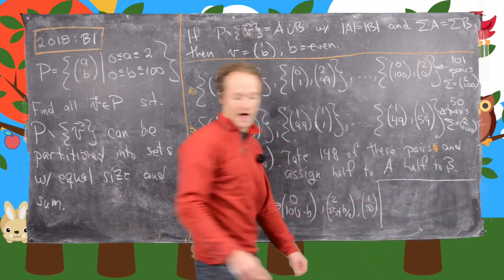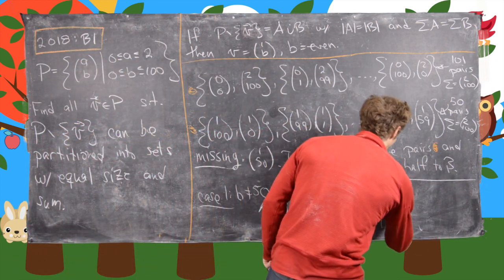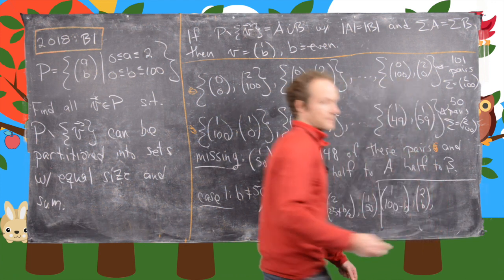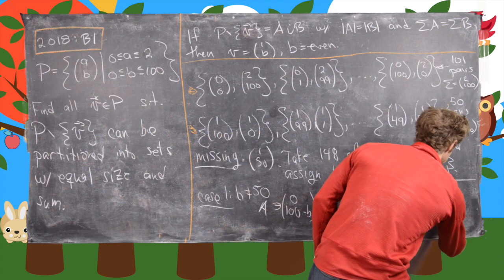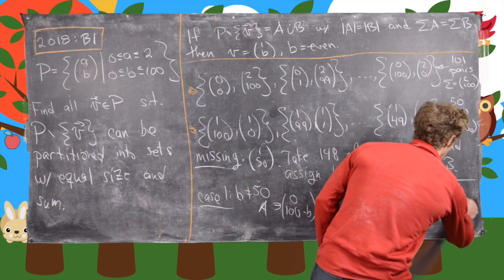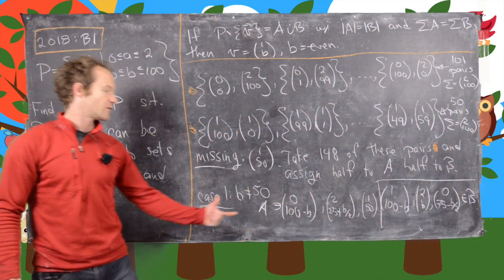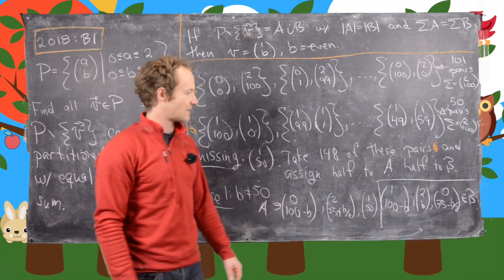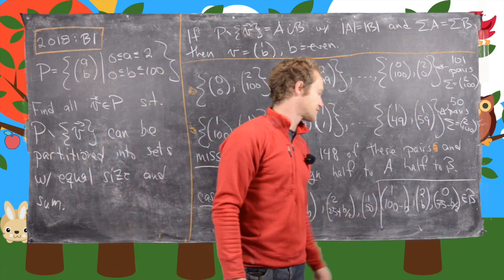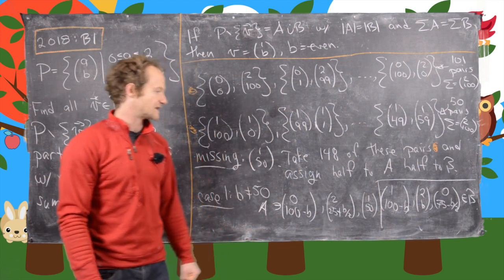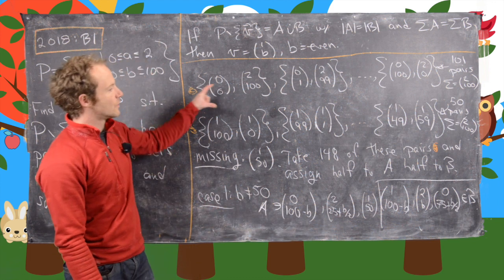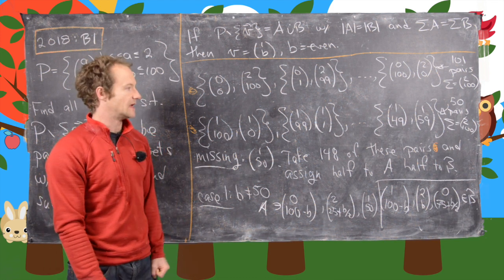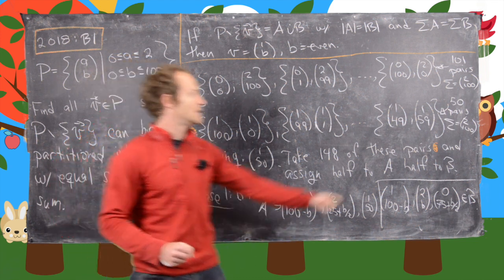And then next we have three others left over: (1, 100-B), (2,B), and finally (0, 75-B/2) - we'll assign those to B. Now notice if we add up these three vectors we get (3, 175-B/2). And if we add up these three vectors we get (3, 175-B/2). So to reiterate, we took these 151 pairs, took 148 of them and split them equally into A and B.